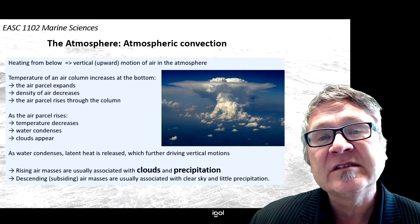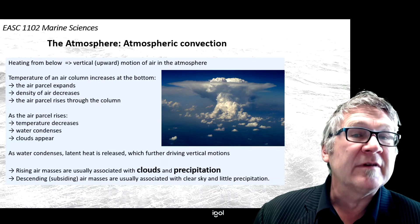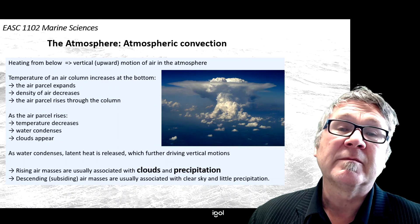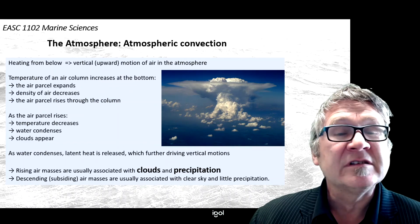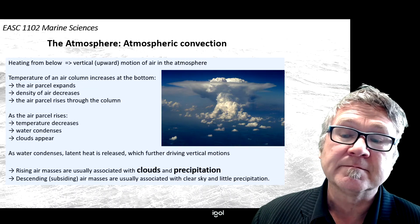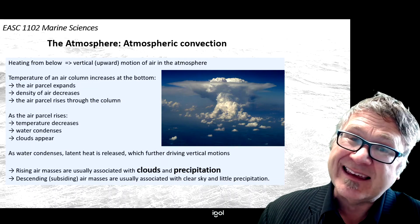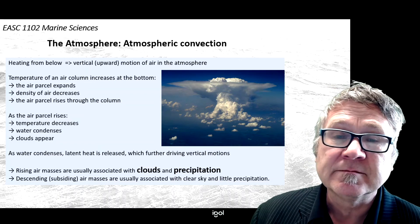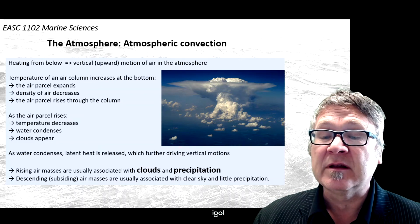Evaporation is the opposite mechanism, which cools down surfaces. On a sweaty day, the sweat on your skin cools down your skin. These mechanisms — evaporation and heat loss — play an important role in the heat balance of the oceans through the latent heat flux, which we will come to later.